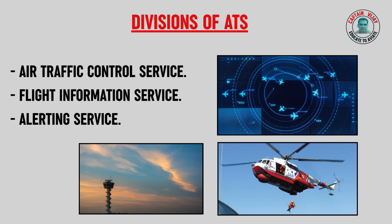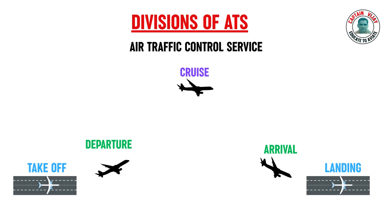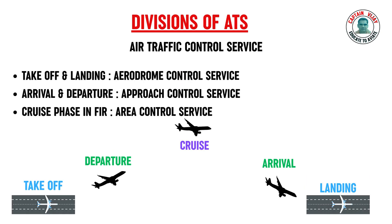Air Traffic Service has been divided into three divisions: Air Traffic Control Service, Flight Information Service, and Alerting Service. When an aeroplane takes off from an airport and lands at another, its flight path can be divided into three sections: the takeoff and landing phase, the arrival or departure phase, and the cruise phase. For each phase, a different ATC service is provided — aerodrome control service for takeoff and landing, approach control service during arrival and departure, and area control service during the cruise phase within an FIR.